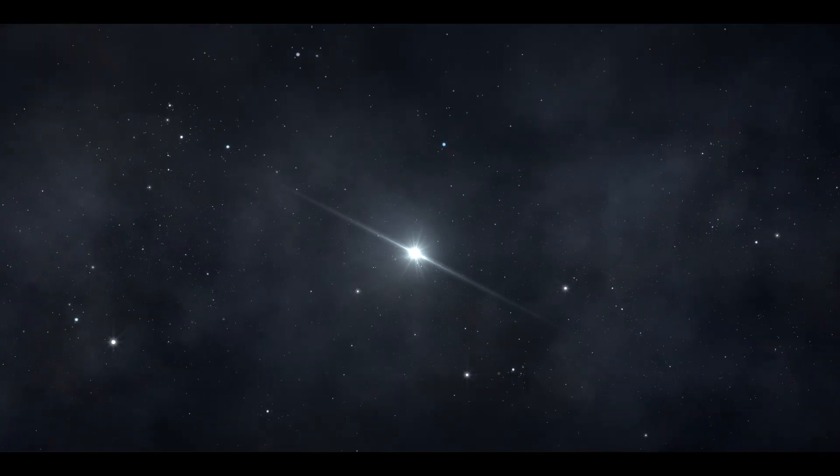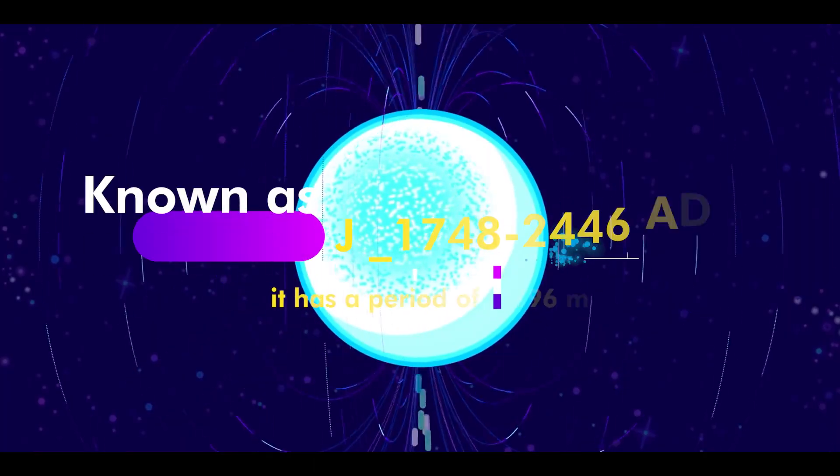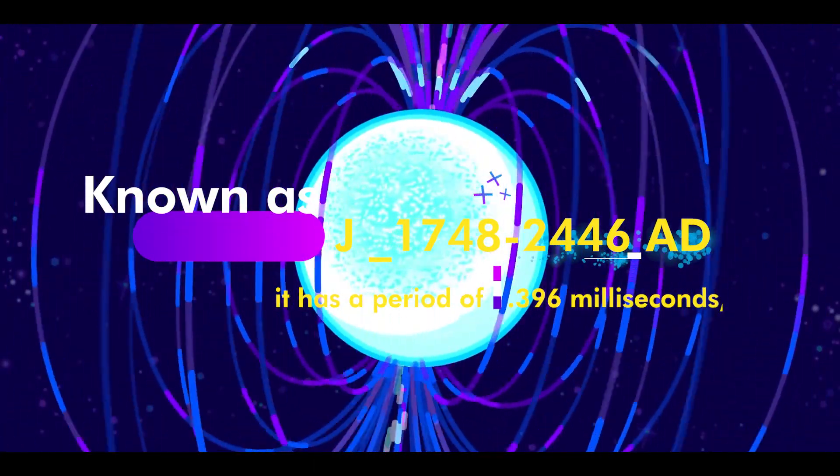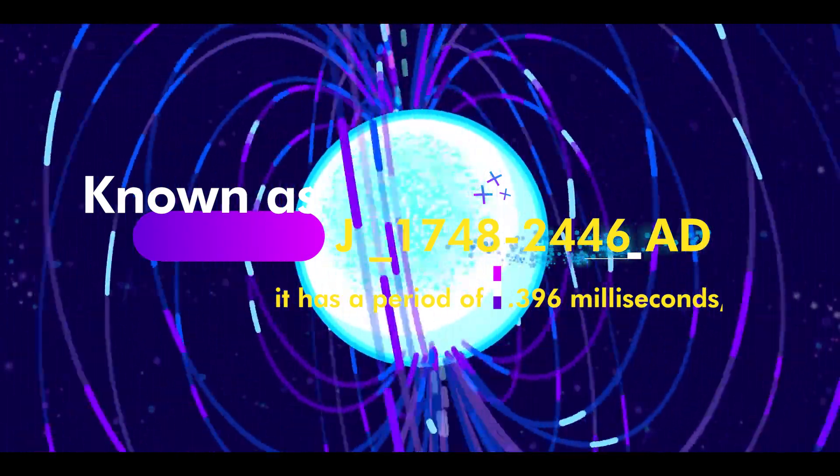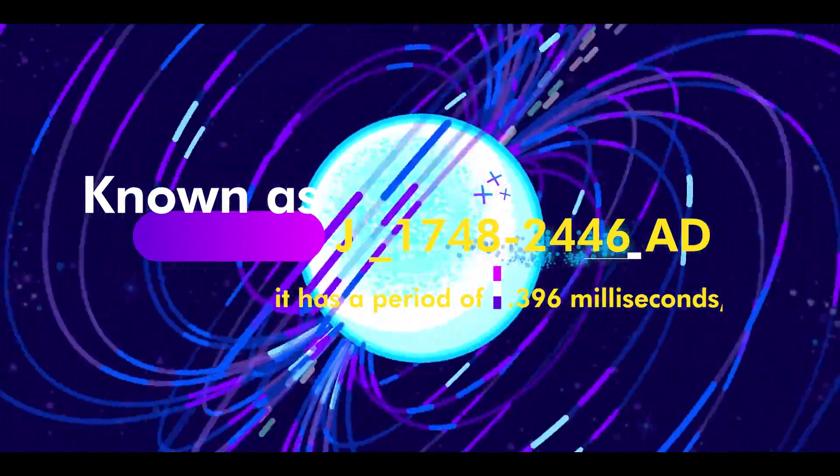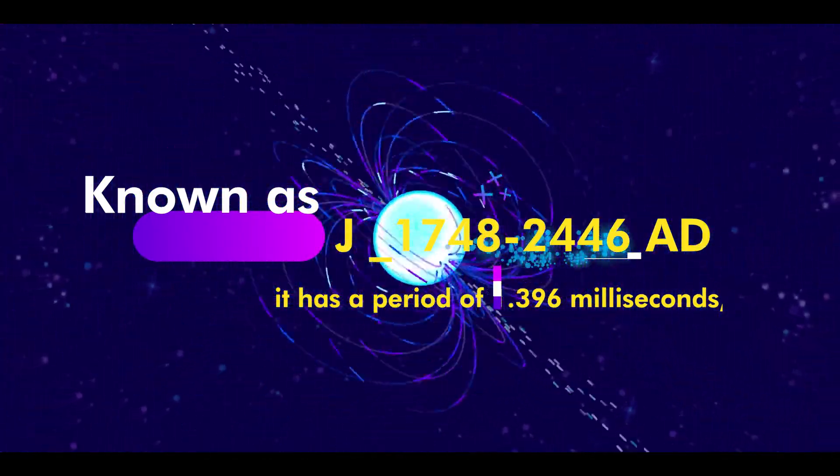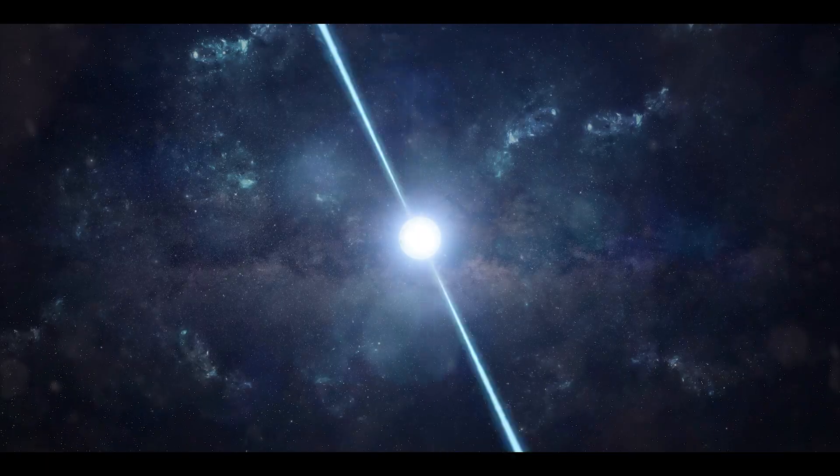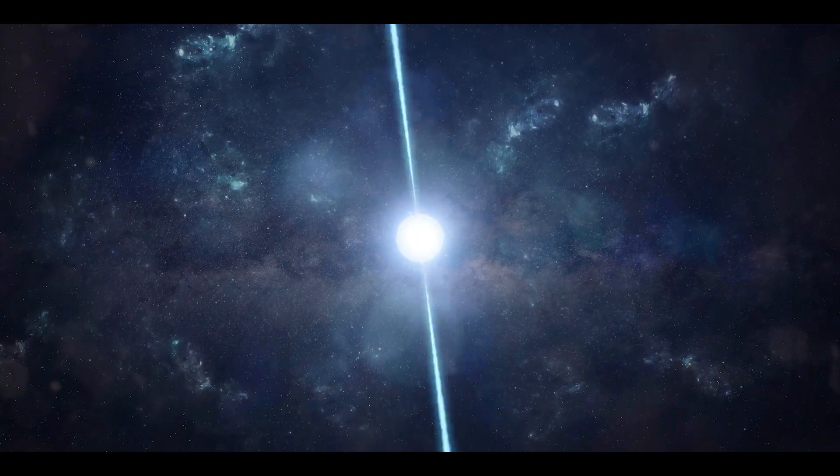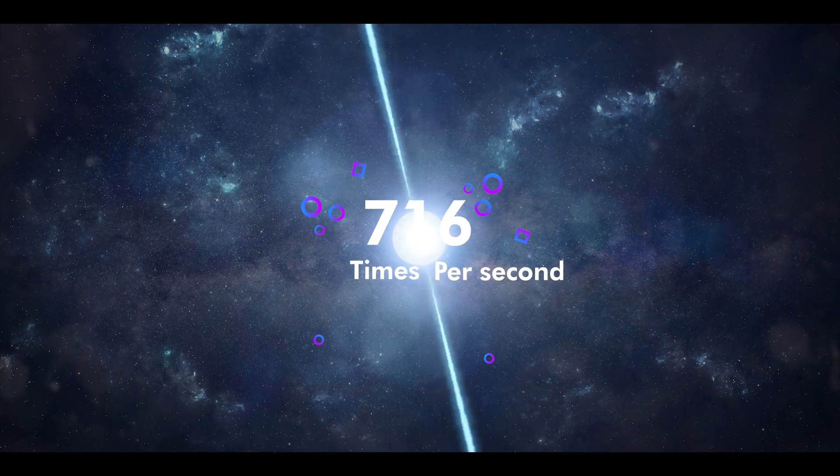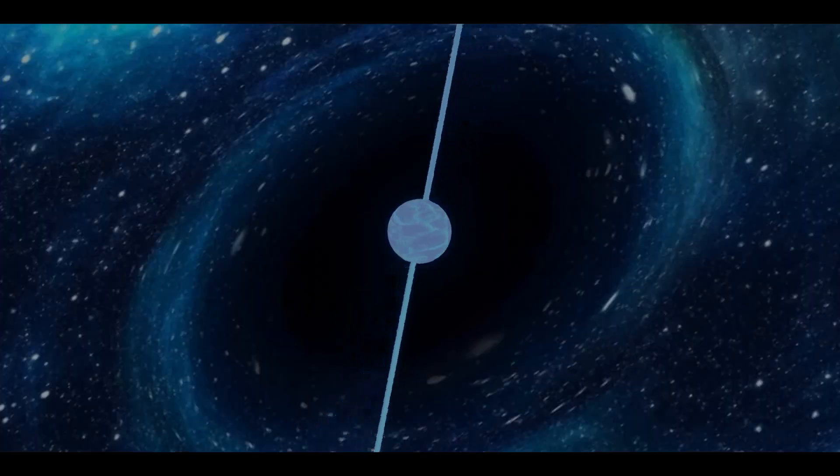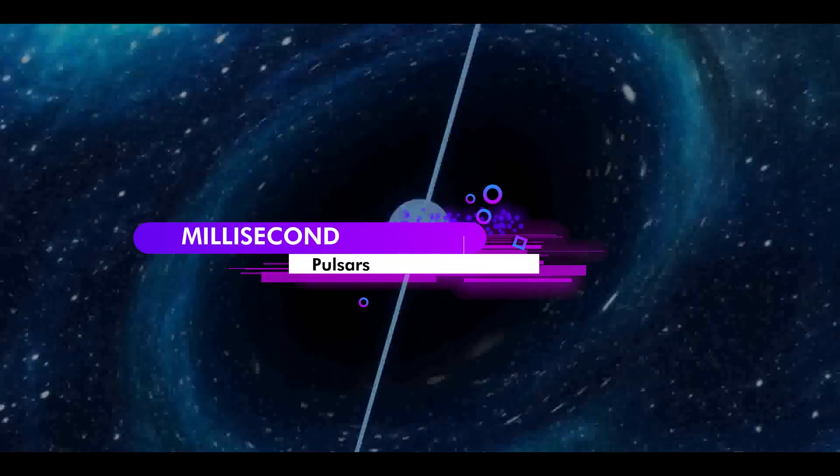In 2006, an even faster one was reported, known as J-1748-2446 AD. It has a period of 1.396 milliseconds, which corresponds to a spin rate of 716 times per second. These fast pulsars are referred to as millisecond pulsars.